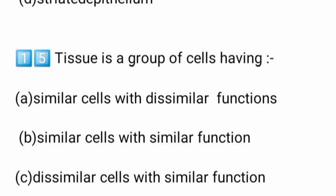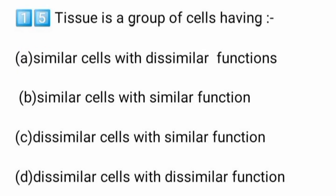Tissue is a group of cells having: A) similar cells with dissimilar function, B) similar cells with similar function, C) dissimilar cells with similar function, D) dissimilar cells with dissimilar function. The answer is option B — similar cells with similar function.